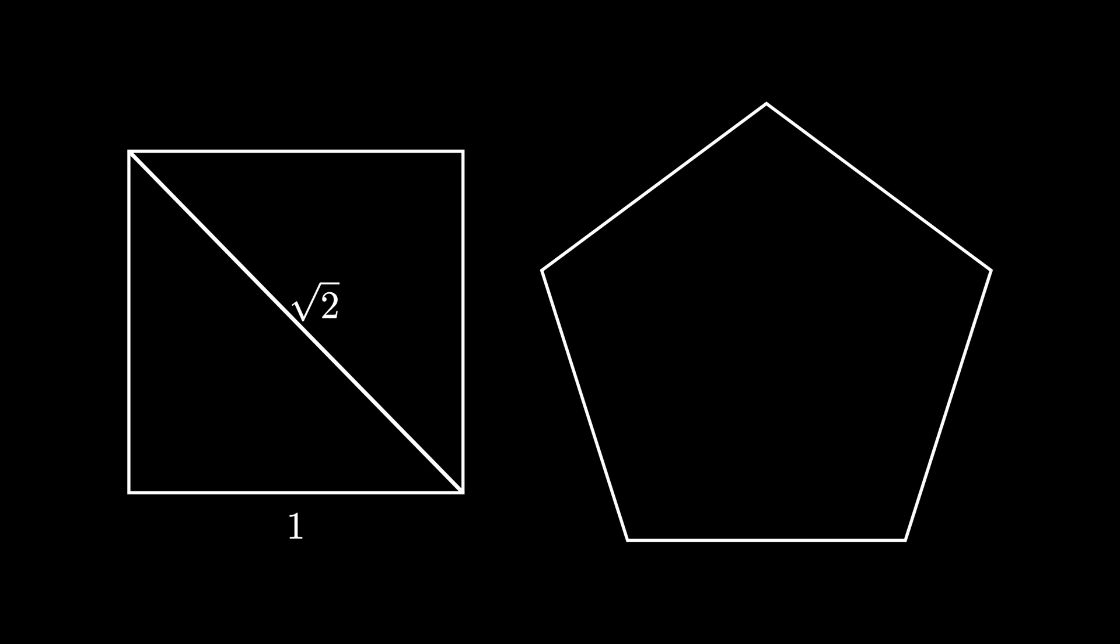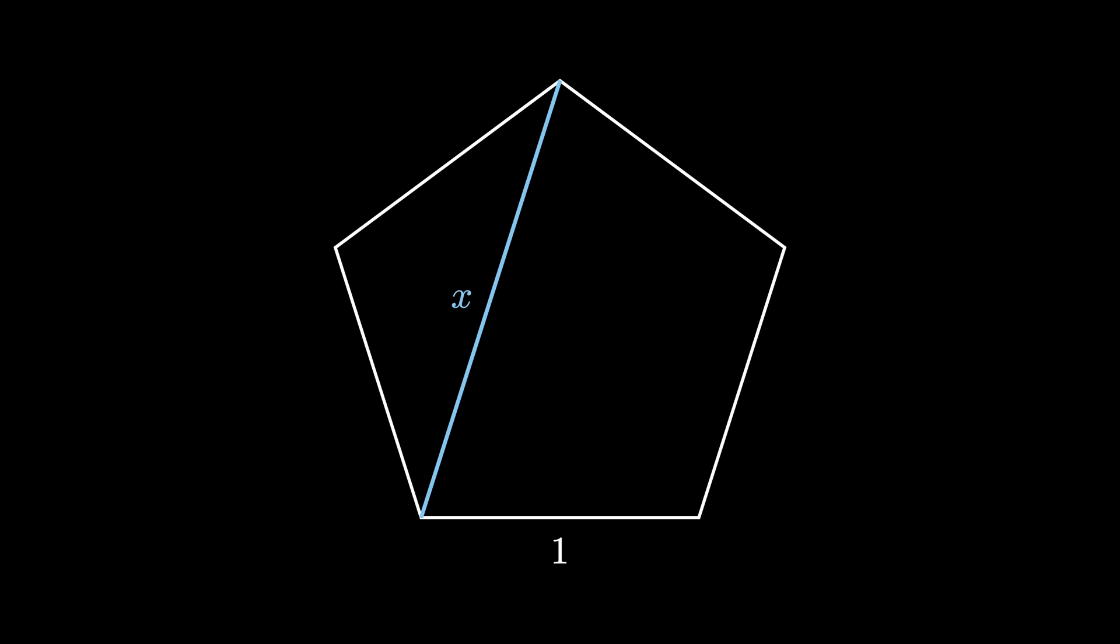Here's a related question: what if we start with a regular pentagon with side length 1? What's the length x of the diagonal cutting through this shape? Let's find out using a visual proof.